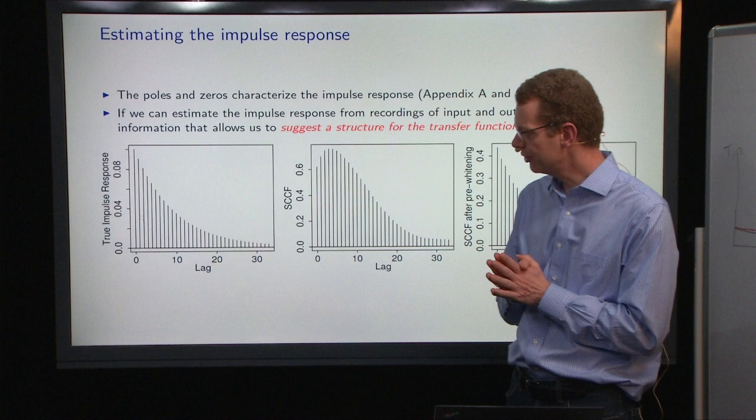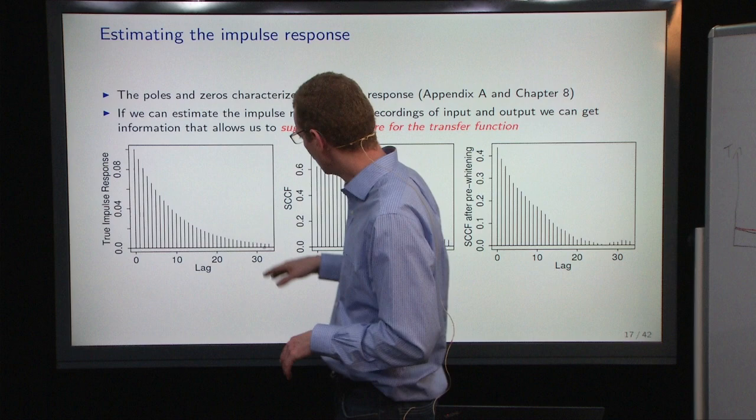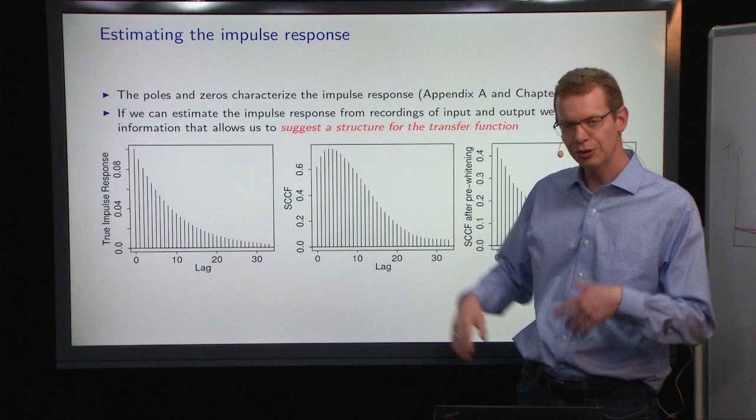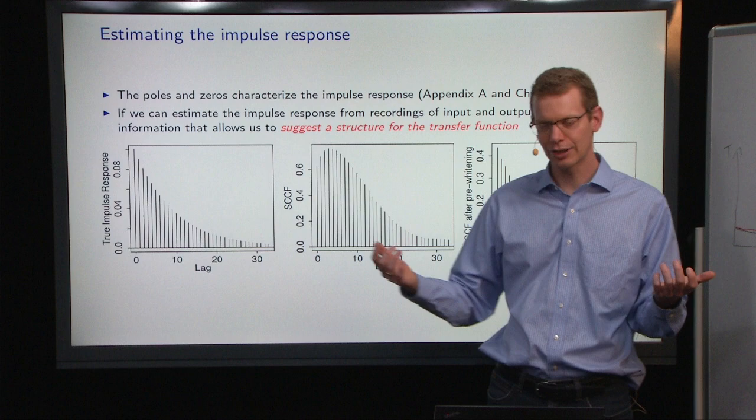So the next part here, first just a little bit of motivation. We have a system where this is the true impulse response, but when we look at the cross-correlation function between the input and the output.